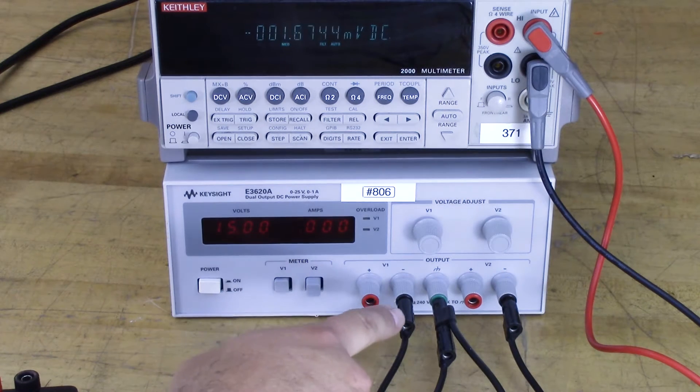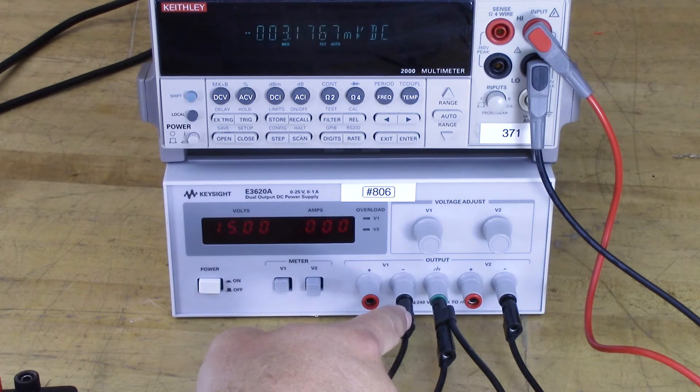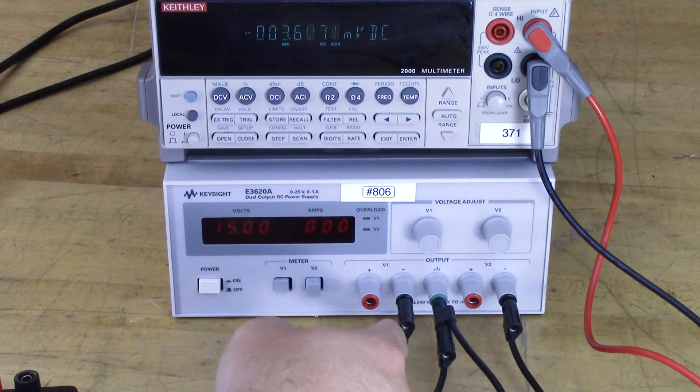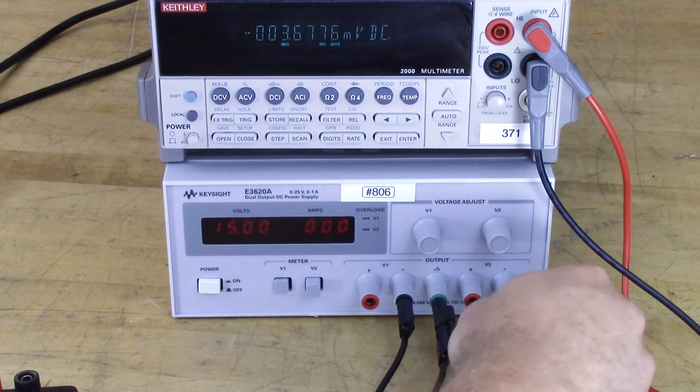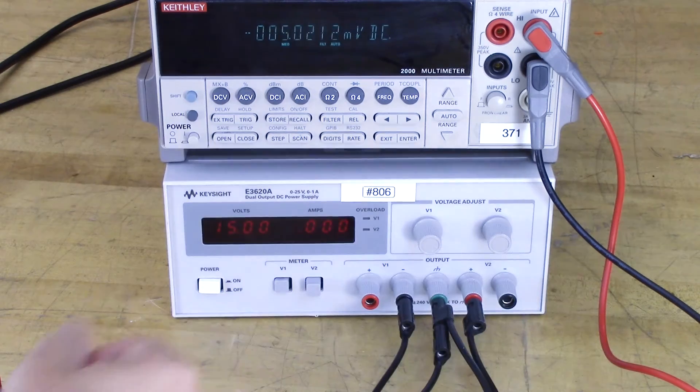So now I can also still use this dual power supply in the non-floating configuration to get a plus minus 15, so I just need to move this over like it was in before, connect that to positive.